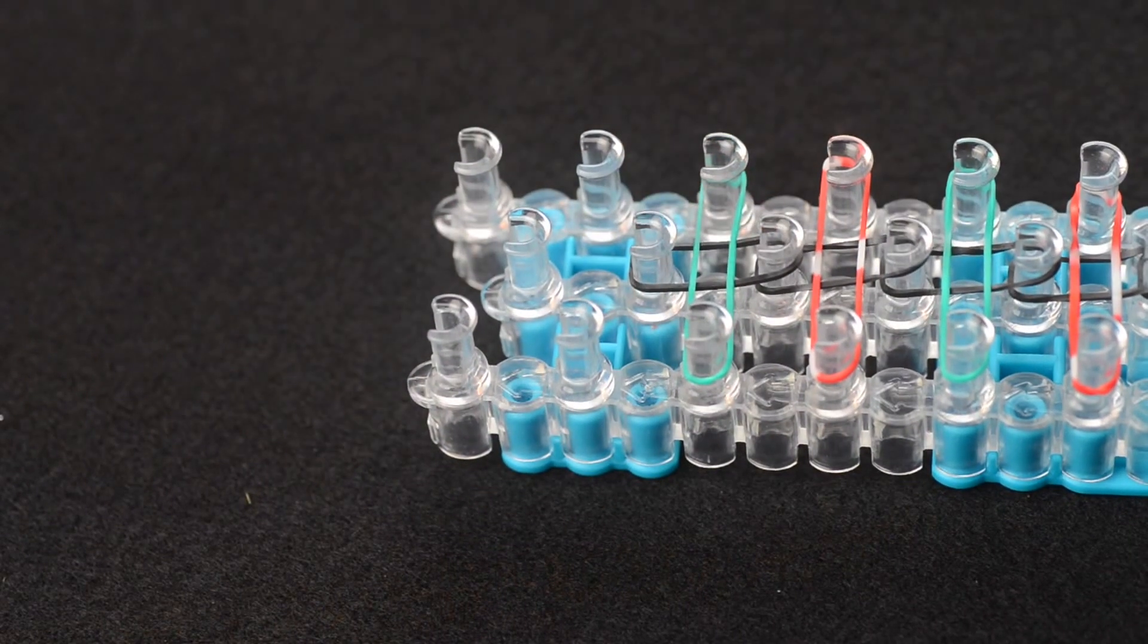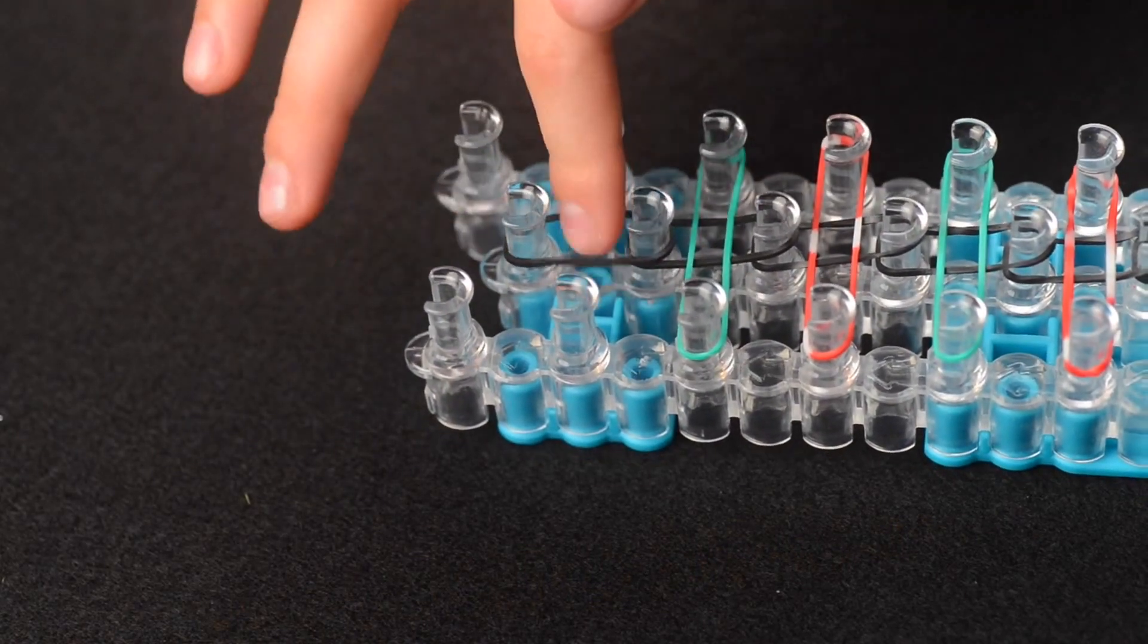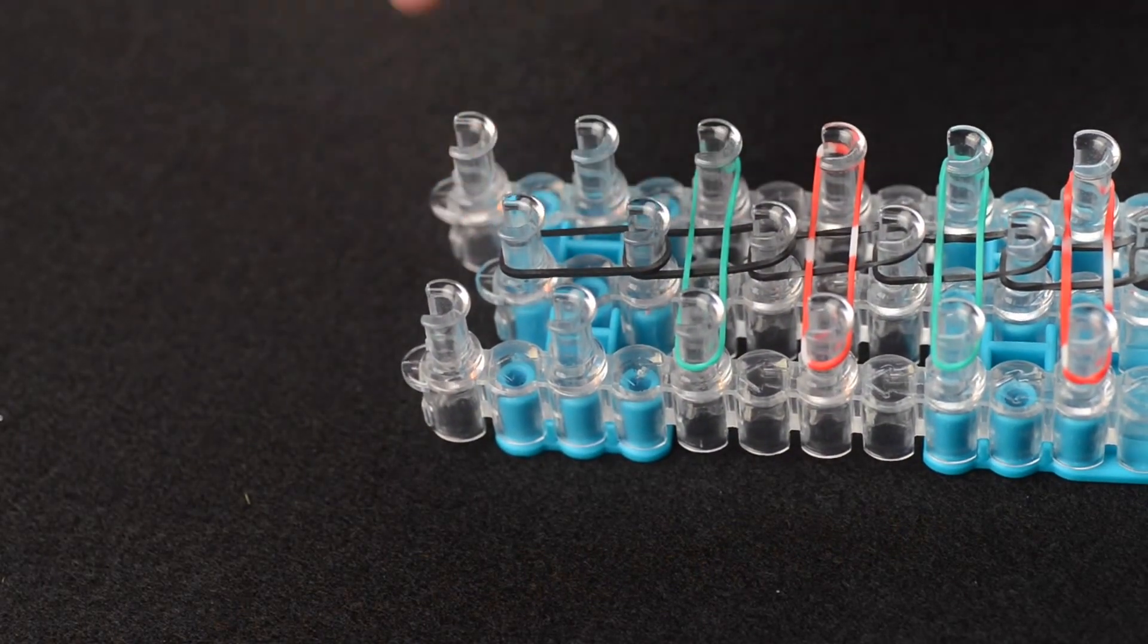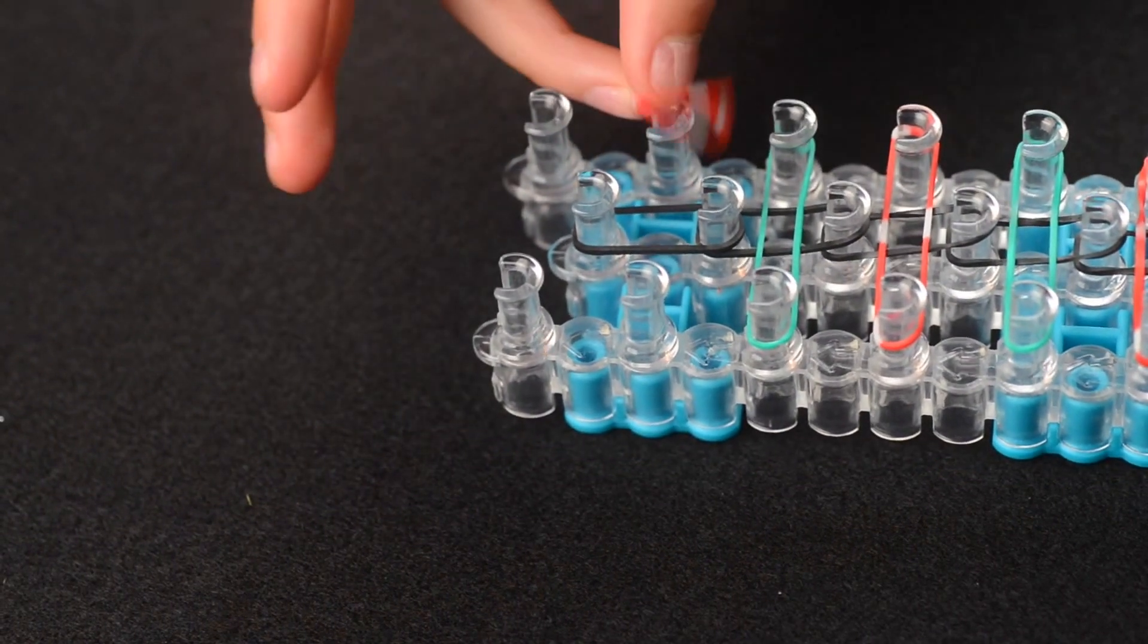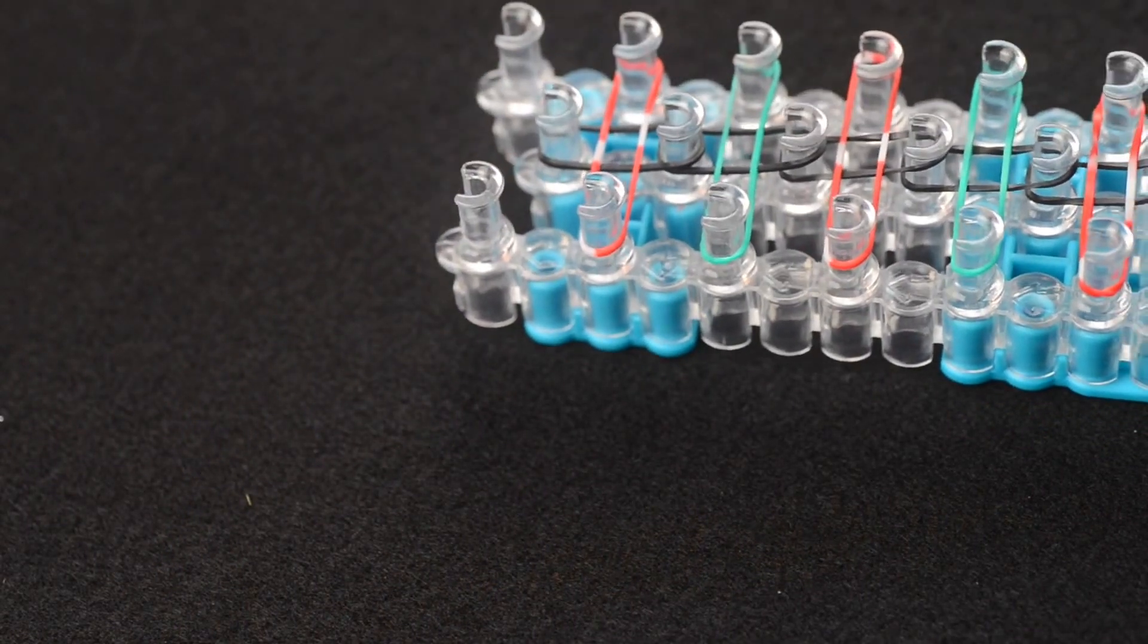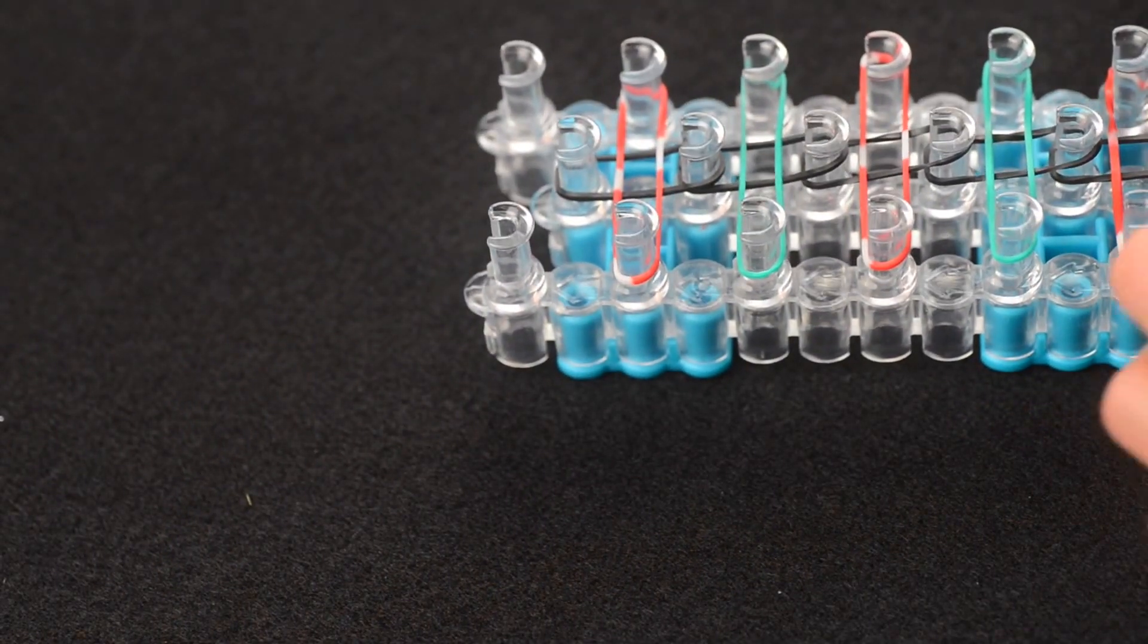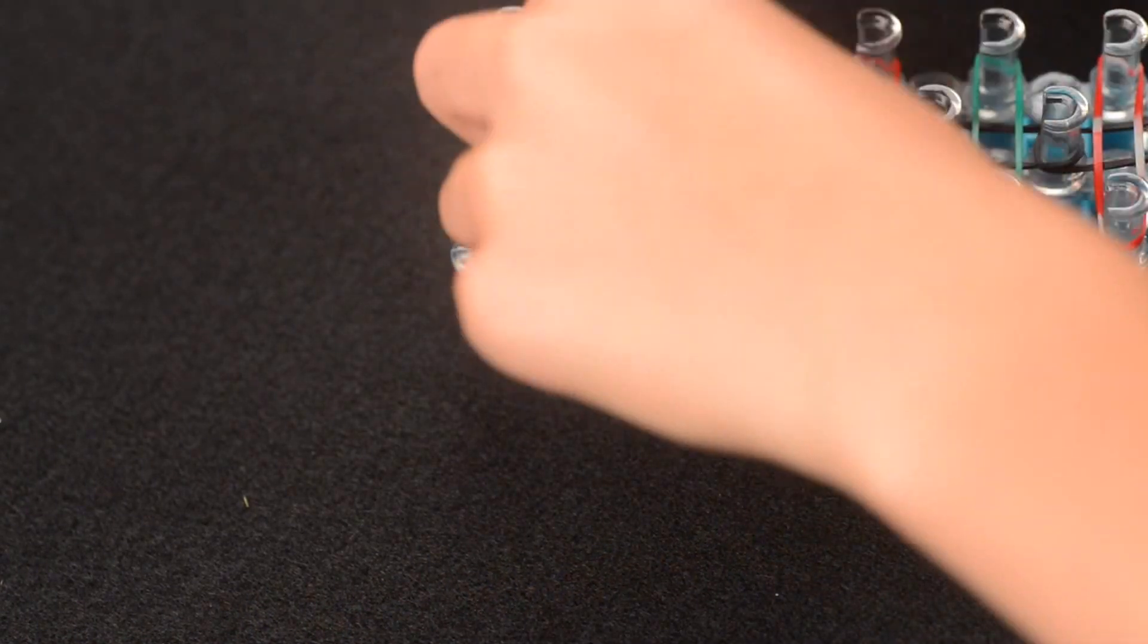So once you get near the end, this should be the second last band you place. So from here to here. And then your last band you will be placing is going to be from this peg and cross over. Now you can push your bands down because it will be easier when you start looping.